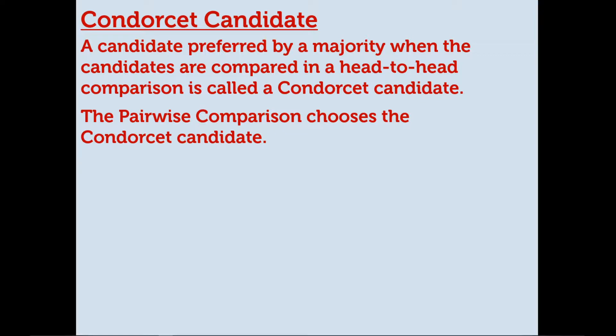The last concept in this section is called the Condorcet Candidate. A candidate preferred by a majority when compared in head-to-head comparisons is a Condorcet Candidate. So it's the candidate who is preferred by a majority in every head-to-head comparison. One key note: the pairwise comparison method always chooses the Condorcet Candidate — so the winner of the pairwise comparison is the Condorcet Candidate.